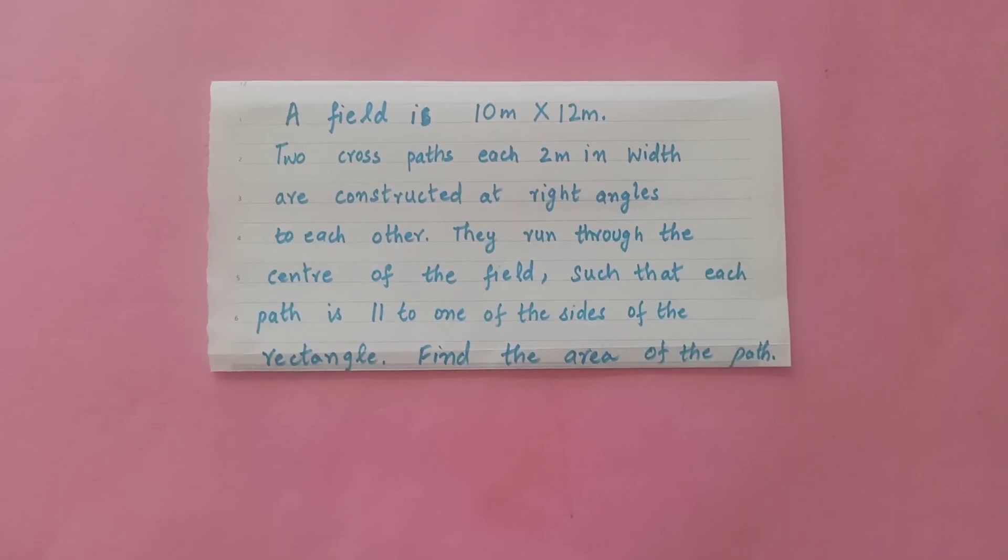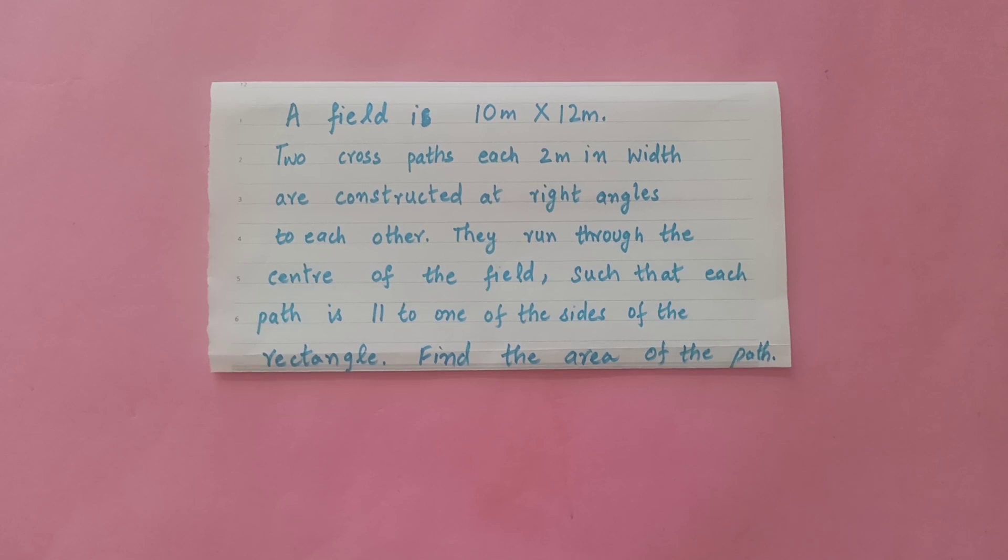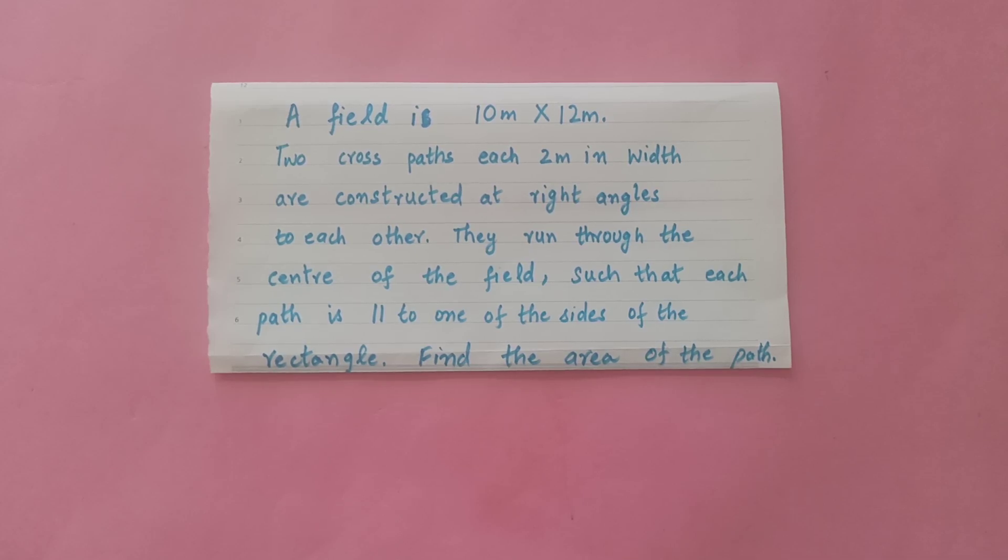Hello everyone, the question is: a field is 10 meters by 12 meters. Two cross paths, each 2 meters in width, are constructed at right angles to each other. They run through the center of the field such that each path is parallel to one of the sides of the rectangle. Find the area of the paths.